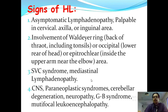CNS involvement may occur: the patient may have paraneoplastic syndrome, where chemical substances or hormones produced by the neoplasm act elsewhere in the body. The patient may also have cerebellar degeneration, neuropathy, Guillain-Barré syndrome, and multifocal leukoencephalopathy — in which the white matter of the brain is affected, causing clumsiness, incoordination, difficulty walking, loss of vision, and muscle weakness.